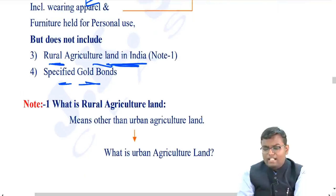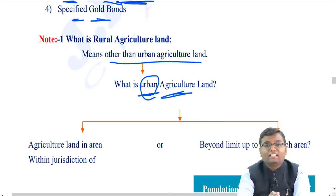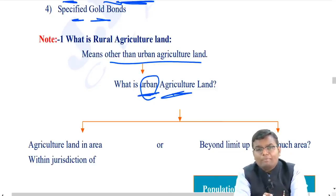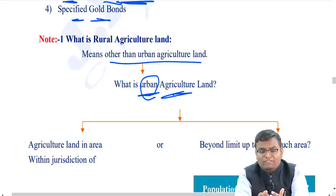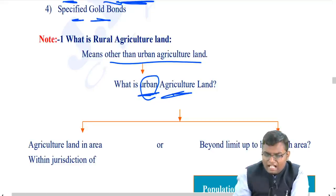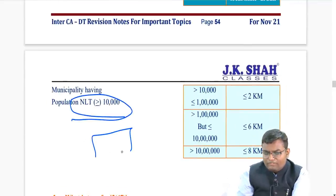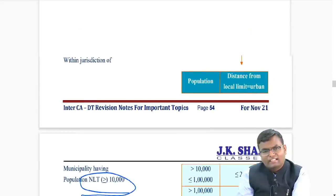Rural agricultural land is defined as land other than urban agricultural land. Urban agricultural land includes any agricultural land within the jurisdiction of a municipality having a population of at least 10,000. Whatever agricultural land is situated within such a city is called urban agricultural land and is a capital asset.